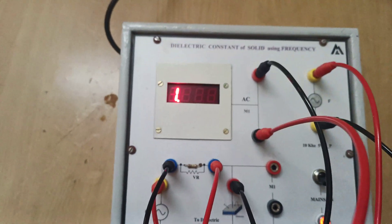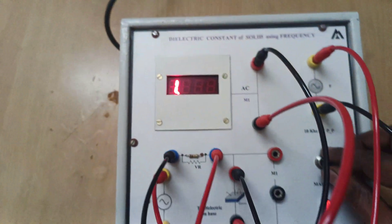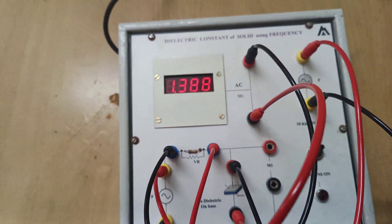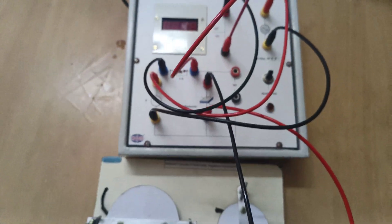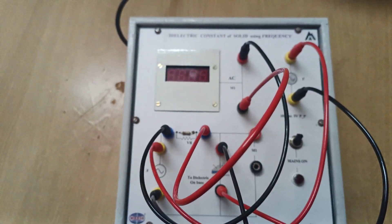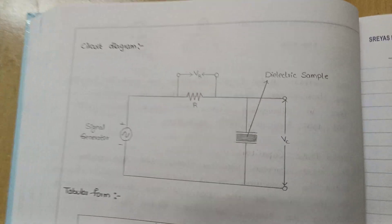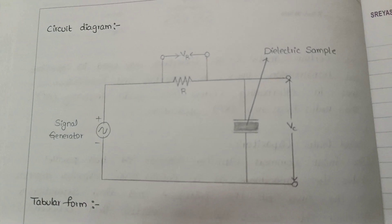Again remove these connections and put them across the resistor. Note down this reading — 1.9 something. After that, switch off.